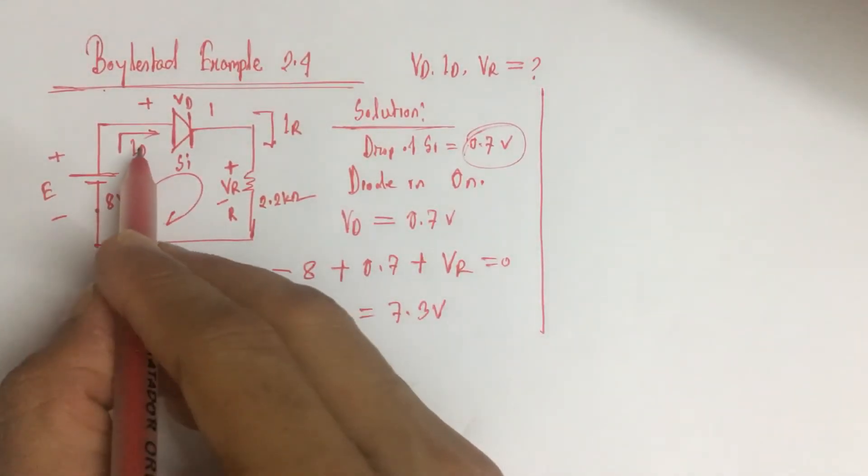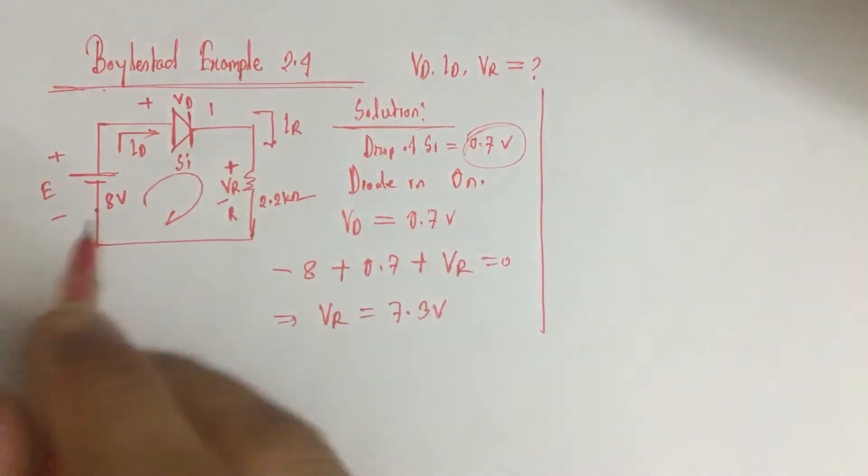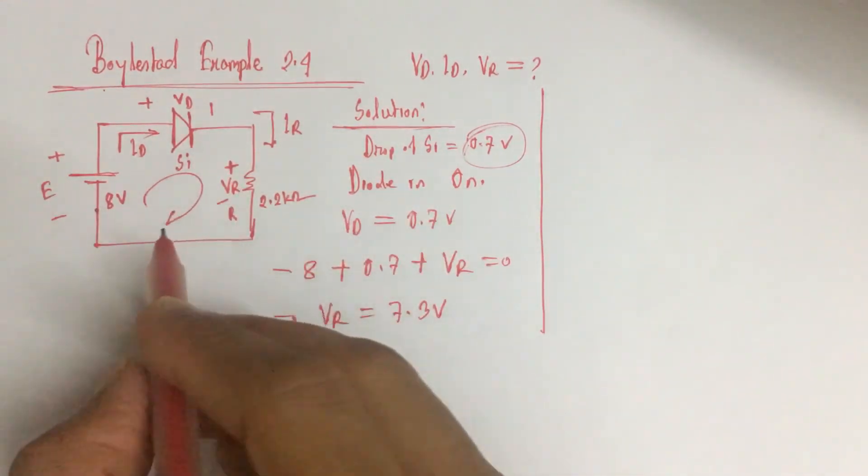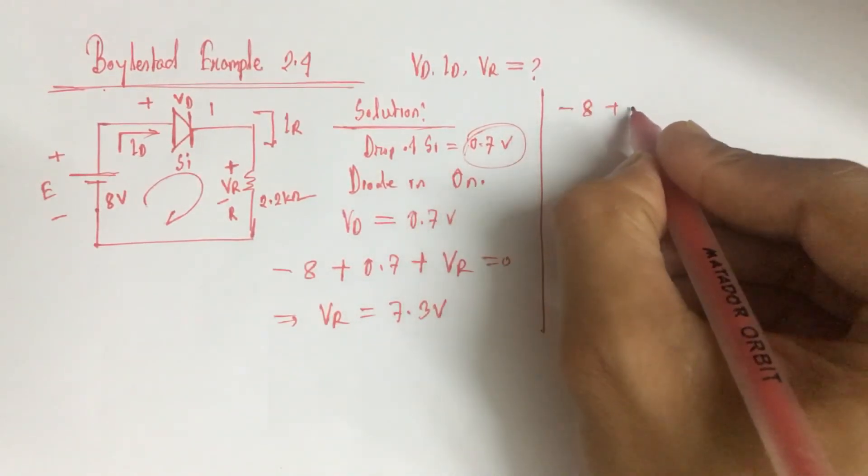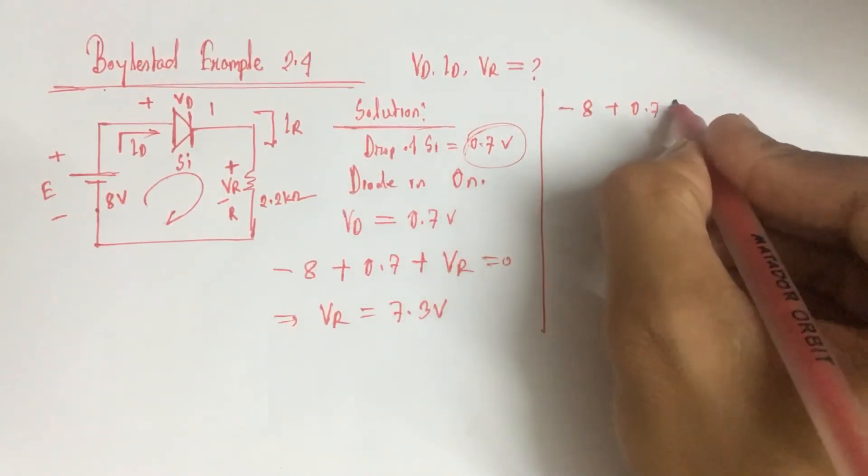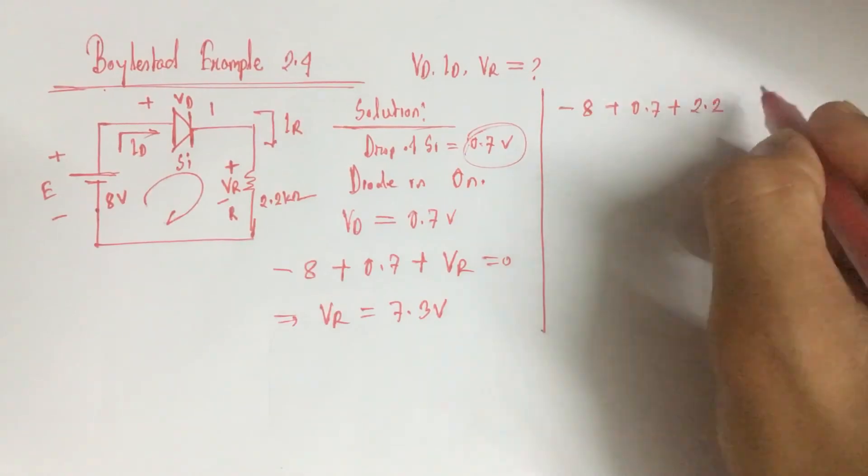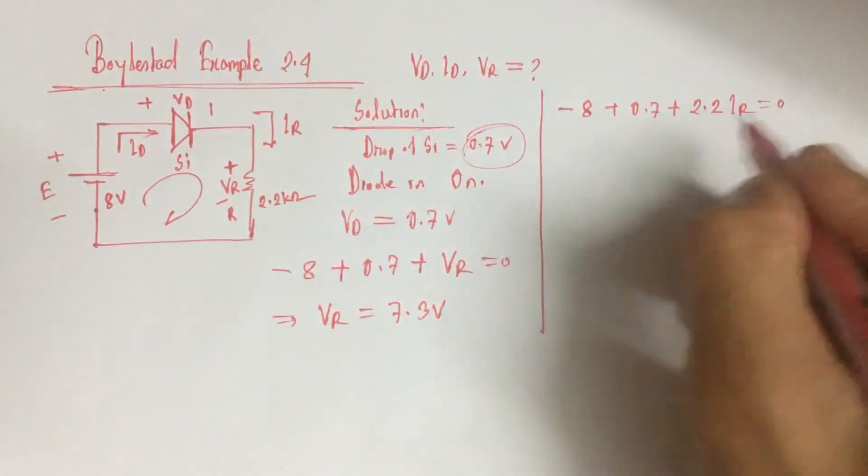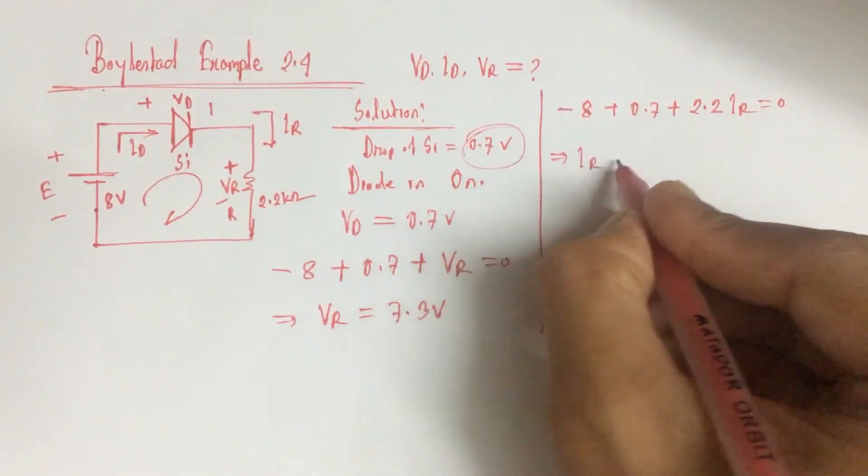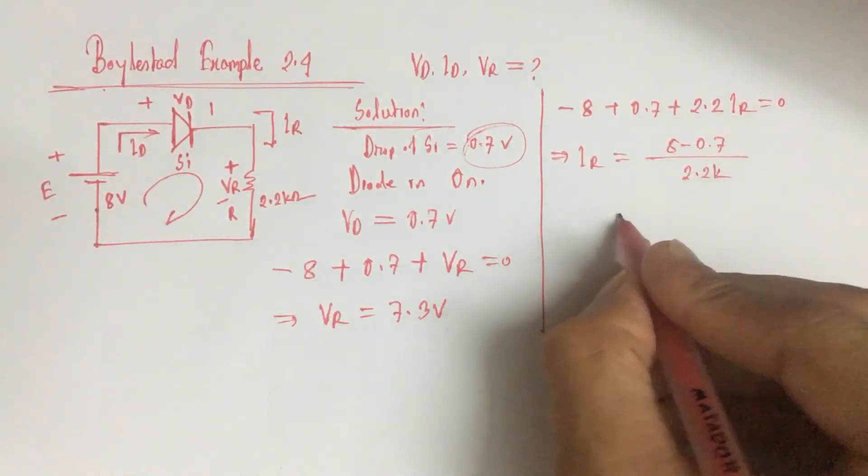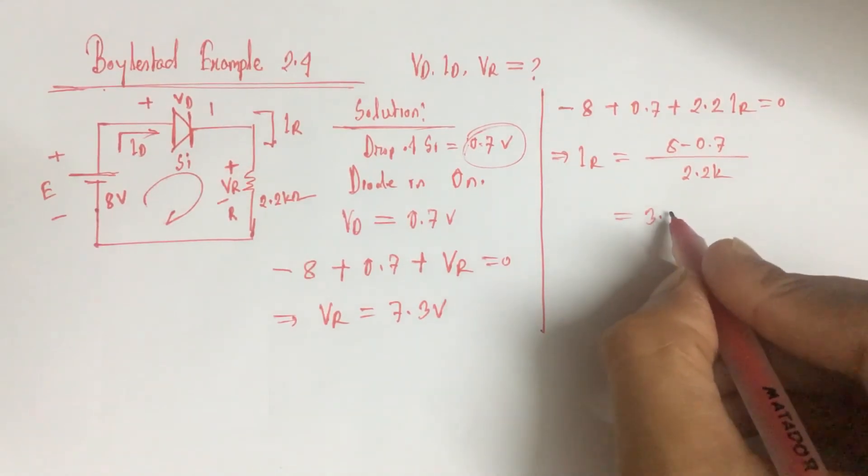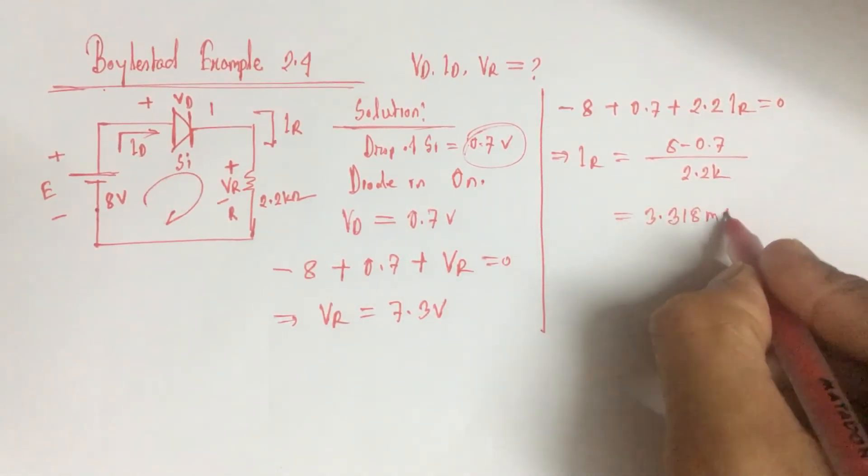Now we see that ID and IR are both equal. So if we run KVL again, minus 8 plus 0.7 plus 2.2 IR equals 0. That is, IR equals 8 minus 0.7 divided by 2.2 kilo, which equals 3.318 mA.